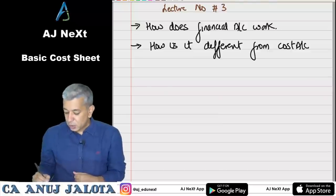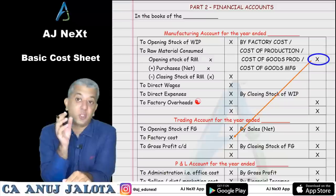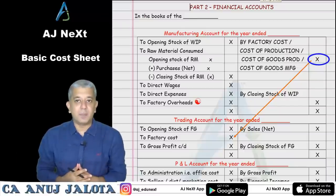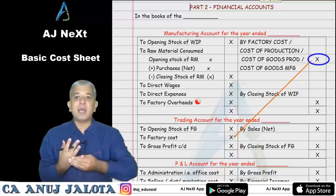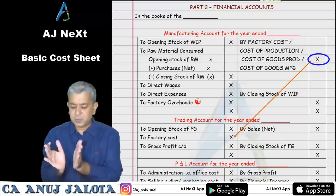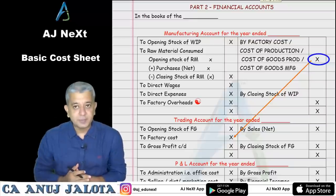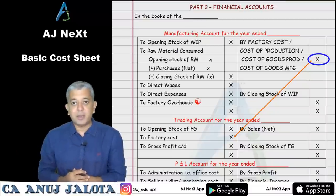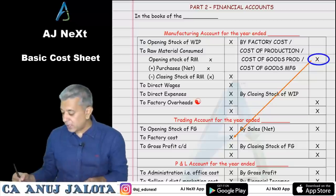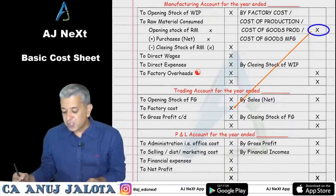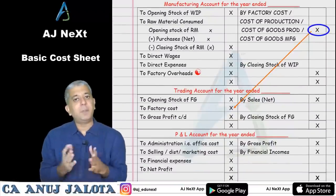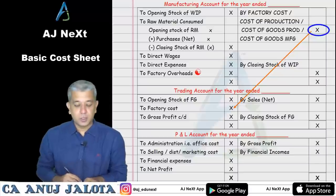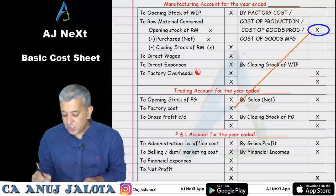This is Part 2: financial accounts vs cost accounts. Whenever you studied any manufacturing company from 11th standard, you made a manufacturing account, trading account, and P&L account. That's exactly what I have placed in front of you. In the books: manufacturing account for the year ended, trading account for the year ended, P&L account for the year ended.